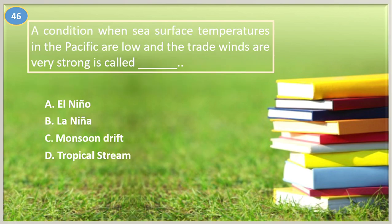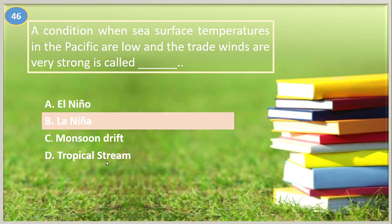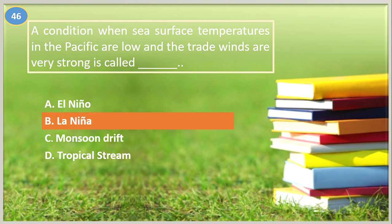Number forty-six. A condition when sea surface temperatures in the Pacific are low and the trade winds are very strong: A. El Niño, B. La Niña, C. Monsoon drift, D. Tropical stream. The answer is letter B, La Niña. During La Niña, trade winds are even stronger than usual.